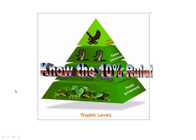Know the 10% rule. It's a rough rule that states that of the energy available to the producers, only about 10% of that energy makes it up into the first-level consumers. And of that energy available to first-level consumers, only about 10% makes it up to the second-level consumers — so they're only getting 1% of the energy available to the producers at the bottom. Read about the 10% rule and make sure you understand it.